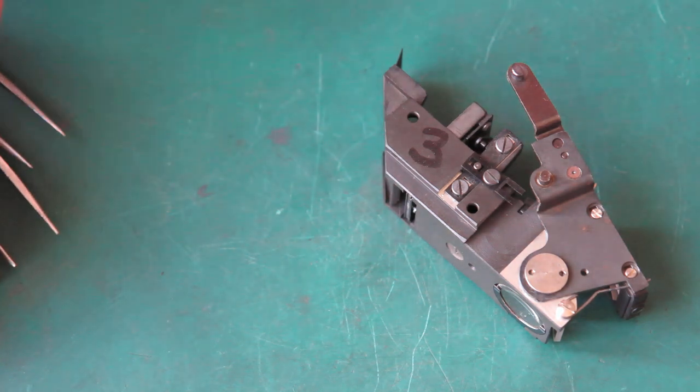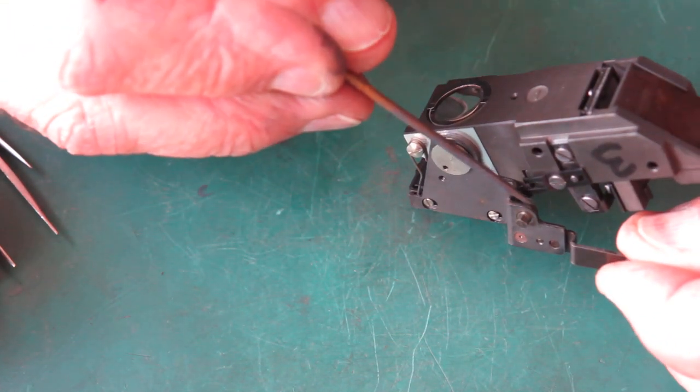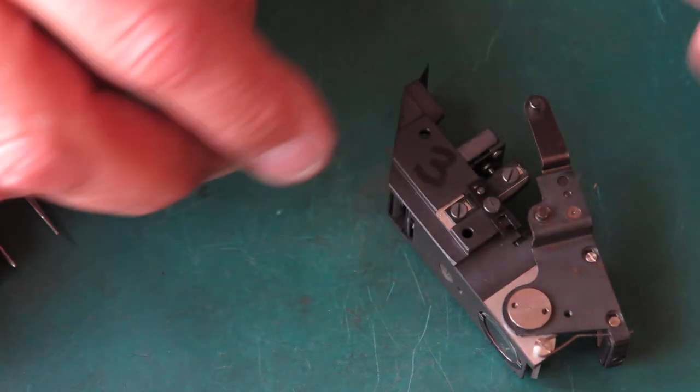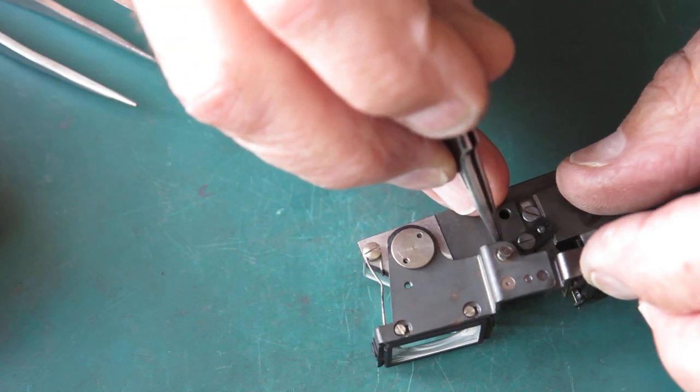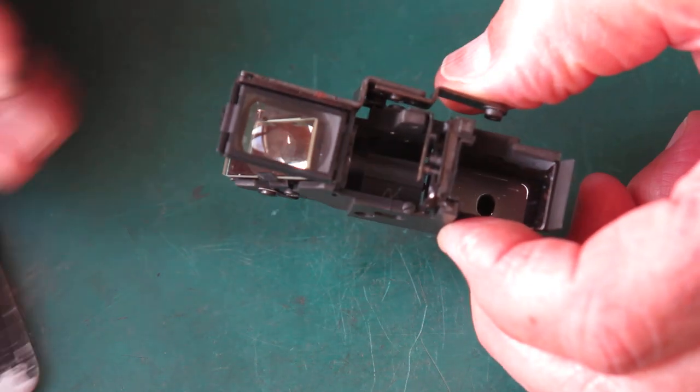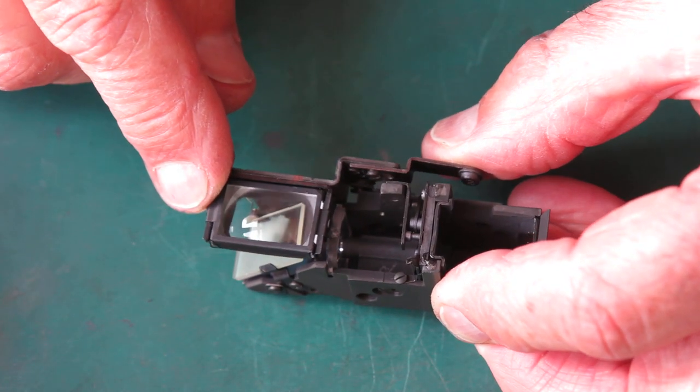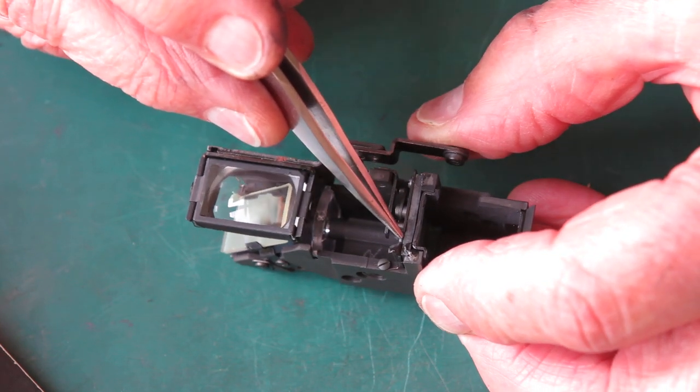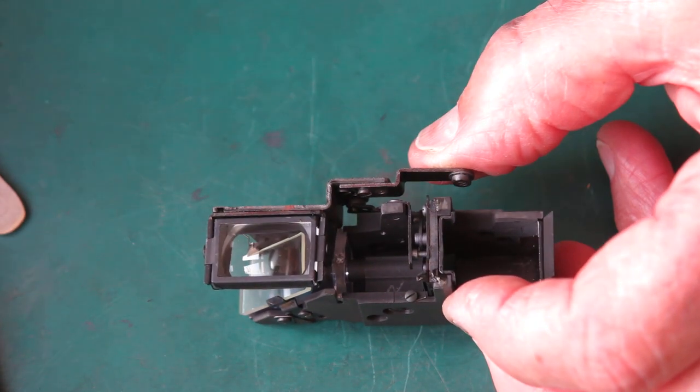Before we put this back in the camera body, this fork here picks up on the post on the arm. I'm going to put a light wipe of molybdenum paste to the inside faces of that fork. If I swing the fork outwards and bring my arm in, the fork's picked up. You'll be able to see that as I move the arm, not only is this moving, but it's also coupled to that fork, which is coupled to this, which moves the parallax correction. So that rangefinder's ready to go back in the camera body.